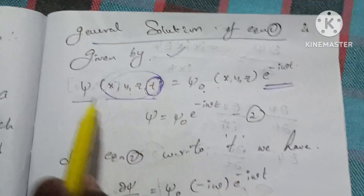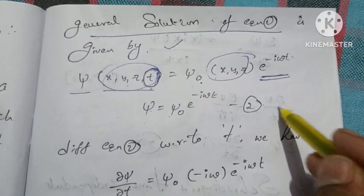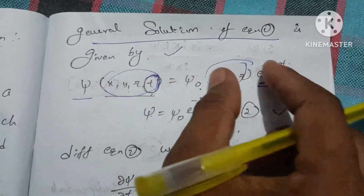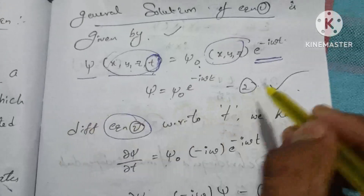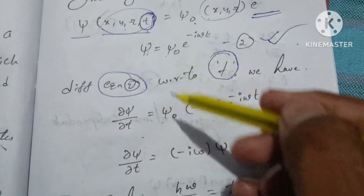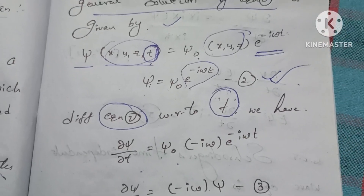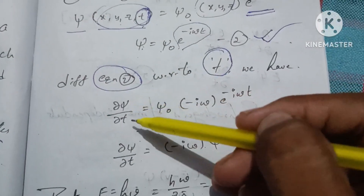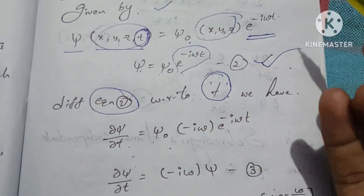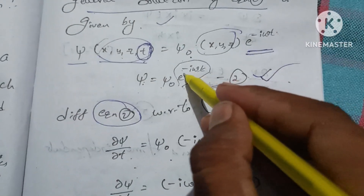So ψ(x, y, z, t) = ψ₀(x, y, z) · e^(−iωt). This is equation 2. Now we differentiate equation 2 with respect to t: ∂ψ/∂t = ψ₀ · e^(−iωt) · (−iω).